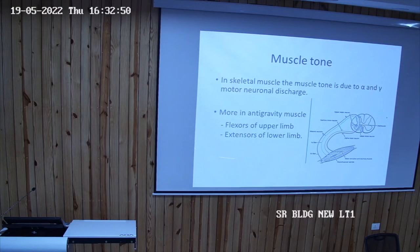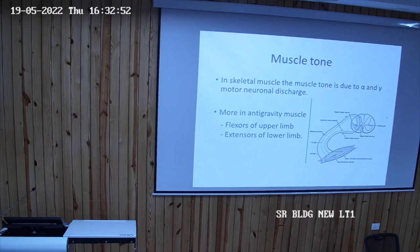And lower limb has extensor groups. And the nature of the voluntary contractions is sub-tetanic when it is weak. Full contraction. That is the tetanic when it is strong. Strong contraction will be tetanic voluntary contraction.